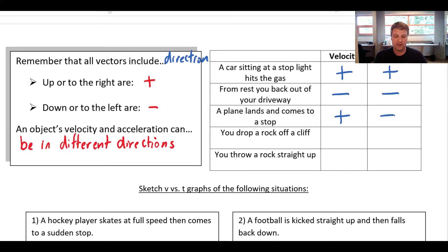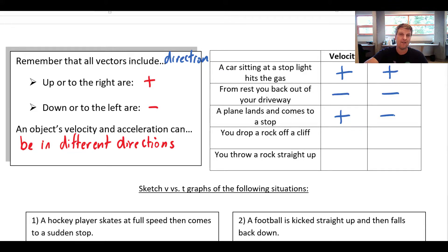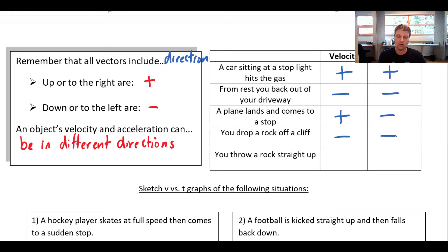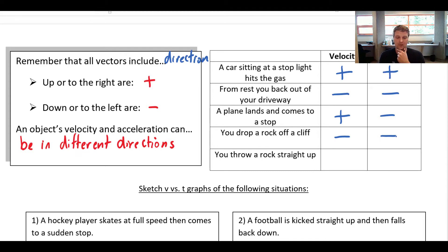You drop a rock off a cliff: it's not moving, you let it go, and it starts moving downward faster and faster. It's going in the downward direction, so velocity is negative. It's getting faster and faster in the downward direction — negative 10, then negative 20, then negative 30 — so the acceleration is also negative, because velocity is increasing in the negative direction.